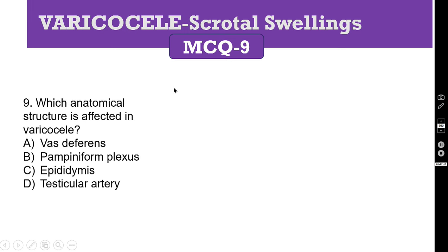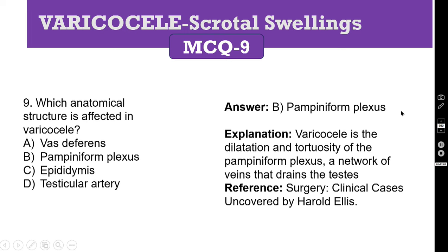Coming to MCQ 9: which anatomical structure is affected in varicocele? A, vas deferens; B, pampiniform plexus; C, epididymis; D, testicular artery. The correct answer is B, pampiniform plexus. Varicocele is the dilatation and tortuosity of the pampiniform plexus of veins, a network of veins that drains the testis. Reference is Clinical Cases Uncovered by Harold Ellis.